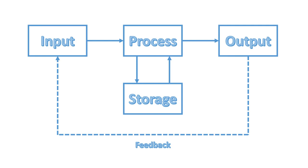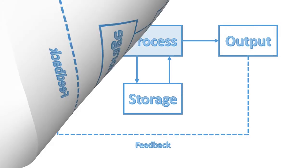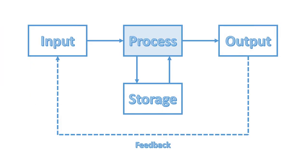So we've looked at inputs, outputs, and storage — here's a diagram you'll need to learn. Data goes into the input section via a mouse, sensor, or any input device. The data is then processed, and from that process two things can happen: either the data is stored or it is output. If it's stored, sometimes it's used as an input later on, and sometimes it's just stored for long-term or archival use.